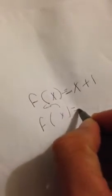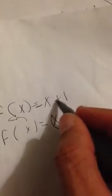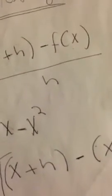We're going to replace every x with (x+h). So f(x+h) equals (x+h) plus 1 — since the 1 is outside the x, we add plus 1 in brackets. Then minus f(x), which is x plus 1, also in brackets.